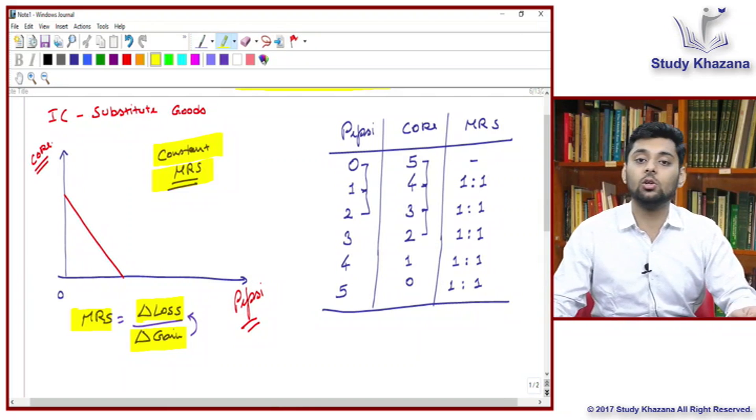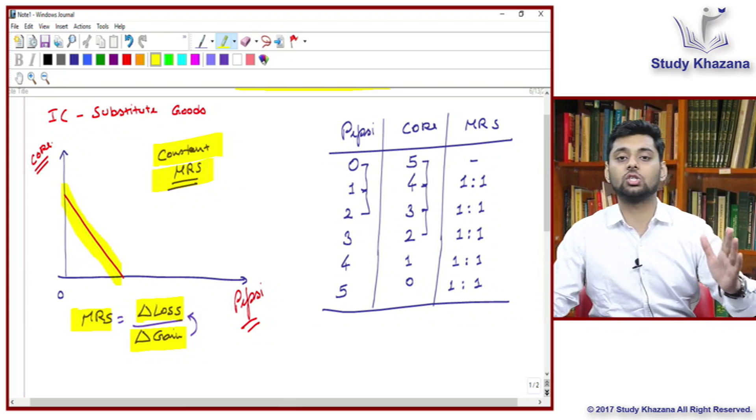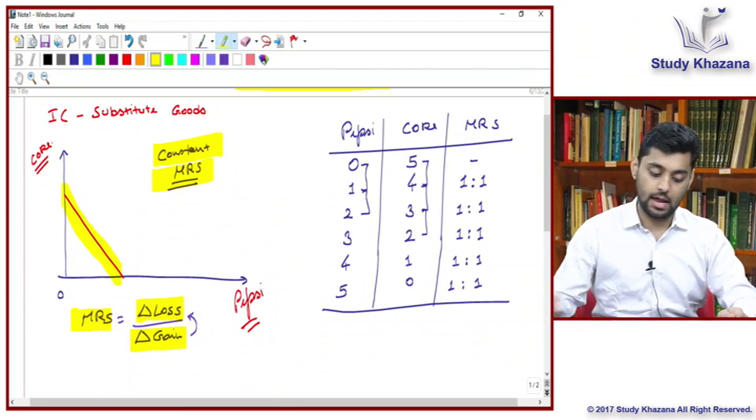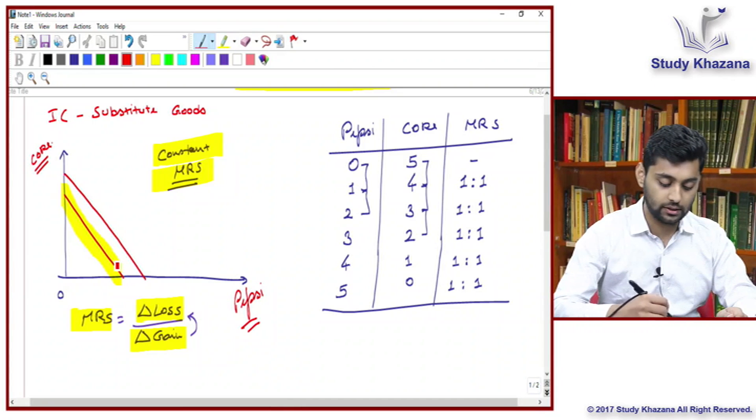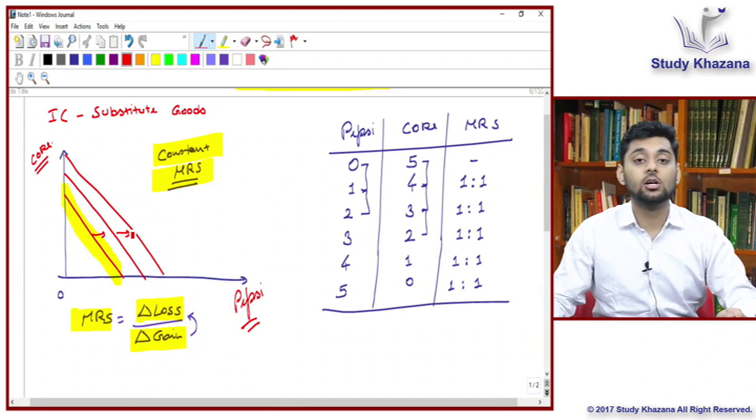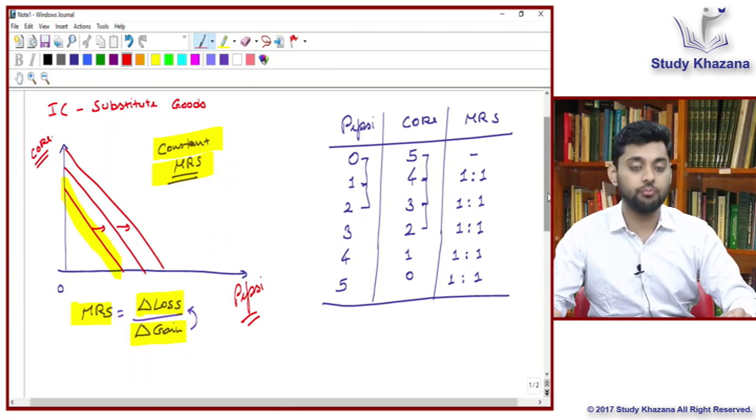If you plot such a schedule, you will get a straight line downward sloping. And again here also, IC higher means higher satisfaction. Therefore, in the case of substitute goods, the IC is a straight line downward sloping curve. The reason is constant MRS.